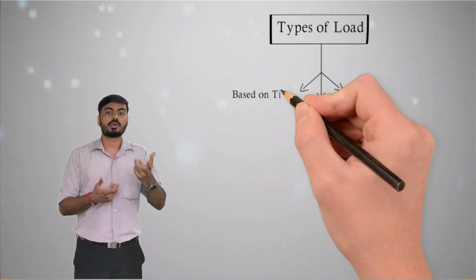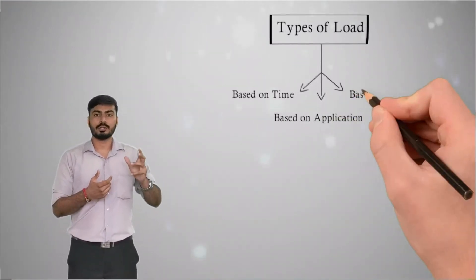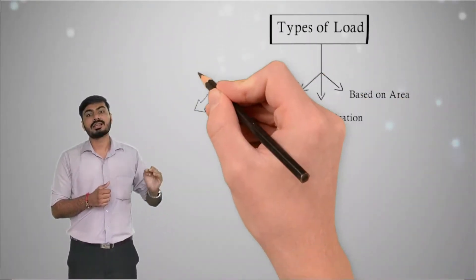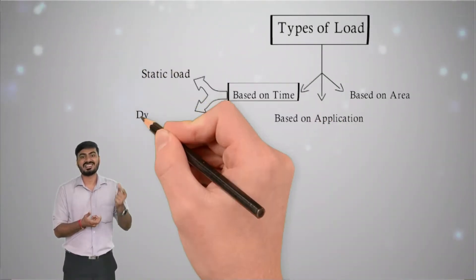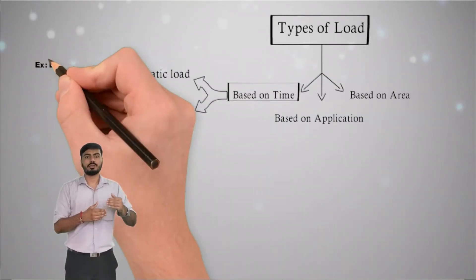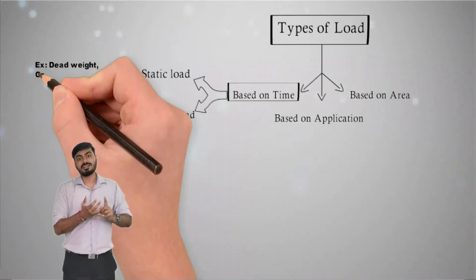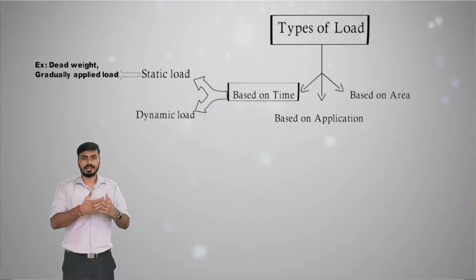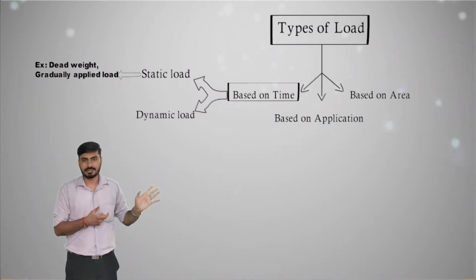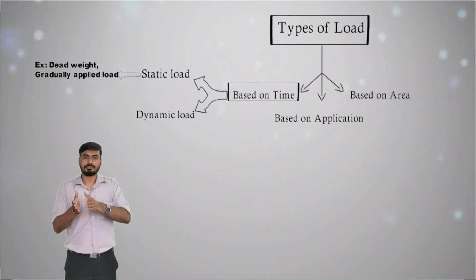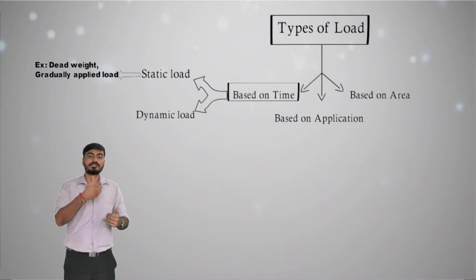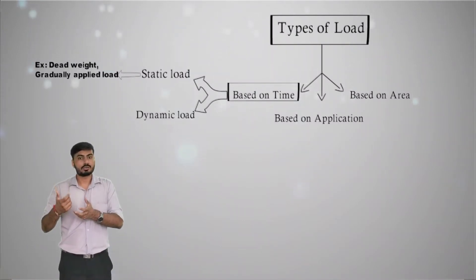Loads categorized based on time are of two types: static load and dynamic load. Static loads are steady types of load — steady with respect to time. When we say a load is steady, both its magnitude and direction are fixed. For example, if the magnitude is 100 kN and direction is horizontal right, and these remain unchanged after one hour, the load is called a static or steady load. Examples include dead weight load and gradually applied load.